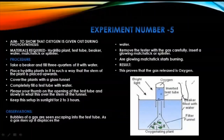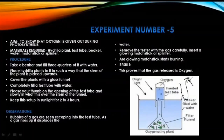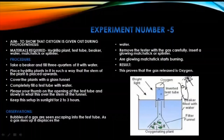To test for the presence of oxygen gas, we bring a glowing splinter near the mouth of the test tube very carefully. The splinter, which is not glowing too brightly, starts glowing more brightly as soon as it comes near the mouth of the test tube. This proves that the gas inside the test tube is oxygen, because oxygen is the gas that supports burning — that supports combustion. With this we prove that oxygen gas is released during the process of photosynthesis.